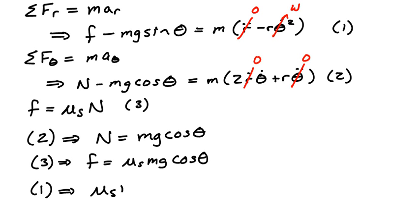And if I plug that into equation 1, I'm going to get that mu s times mg times the cosine of the angle theta minus mg times the sine of the angle theta is going to equal minus m times r times omega squared.